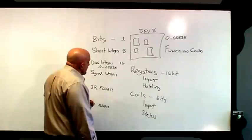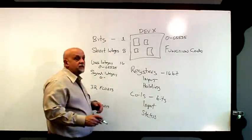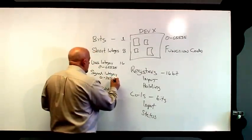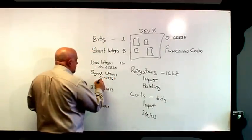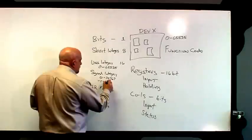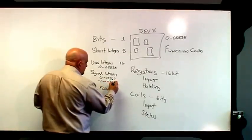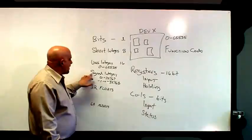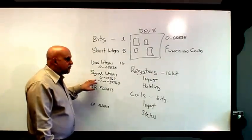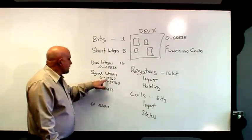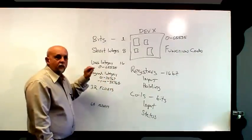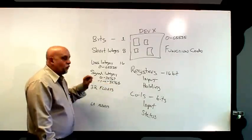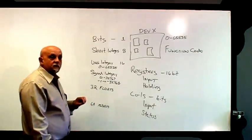A signed integer is different — positive signed integers go from 0 to 32,767, and negative go from minus 1 down to minus 32,768. The high bit, when you look at this in binary, determines whether it's positive or negative. That's why 32,767 is the highest value without the high bit being set. As soon as that high bit is on, it becomes minus 32,768, and each step less than that is minus 32,767, and so forth.